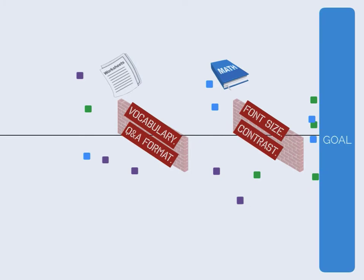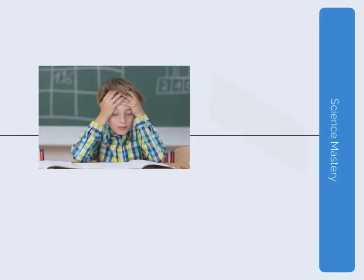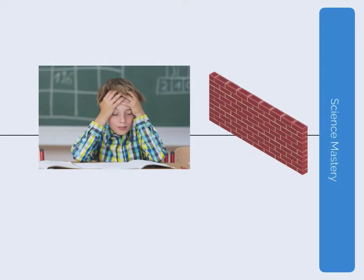For example, a student who struggles to read at grade level may find himself at a disadvantage in a science class he loves, because his only option for learning about the subject comes from a textbook he cannot read.